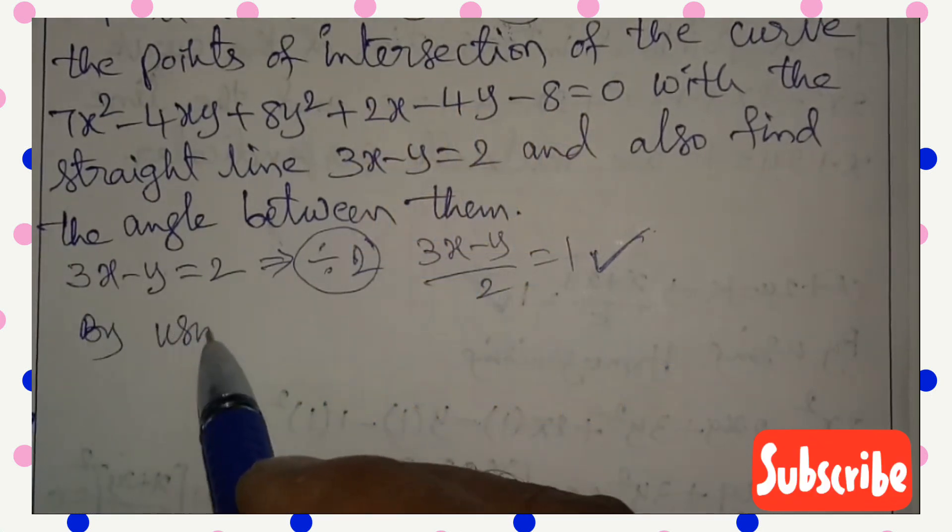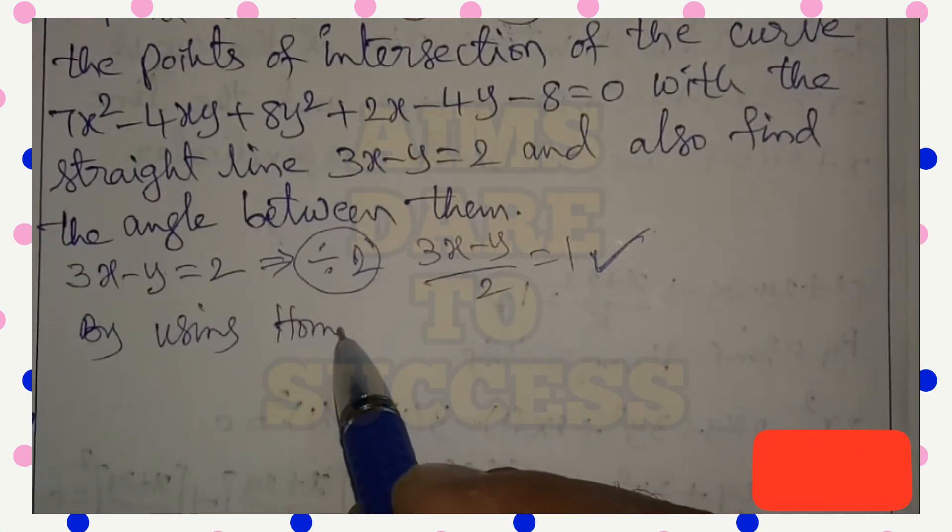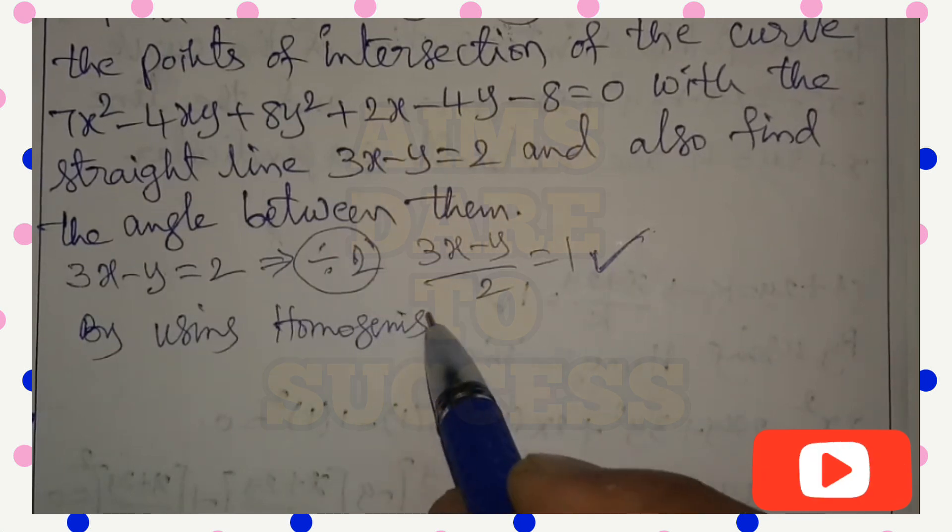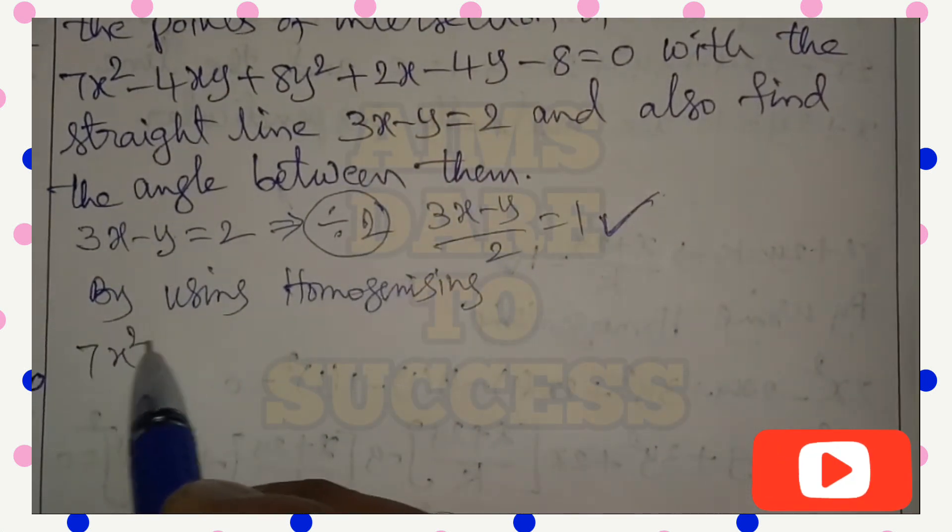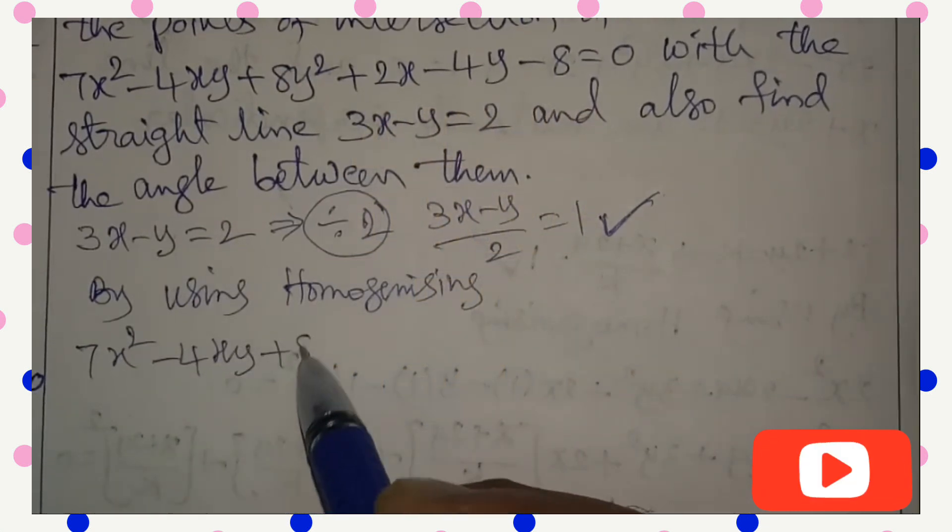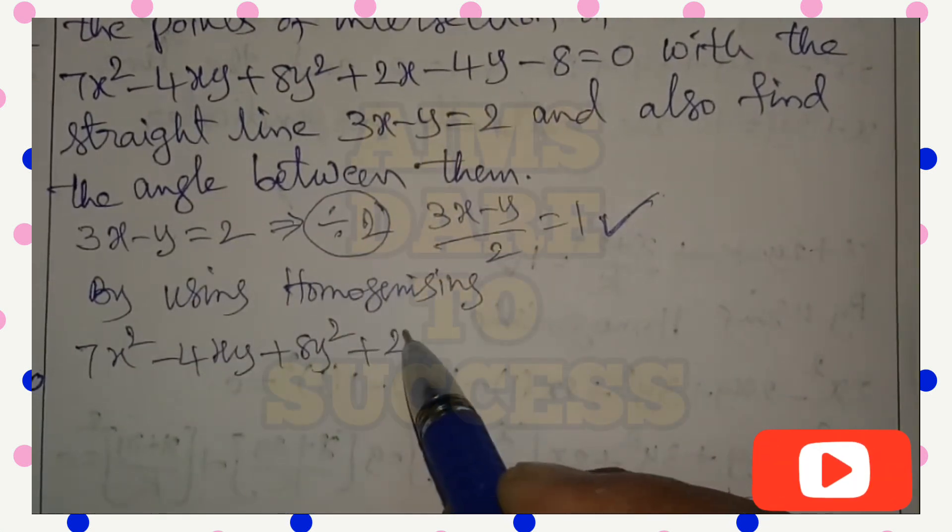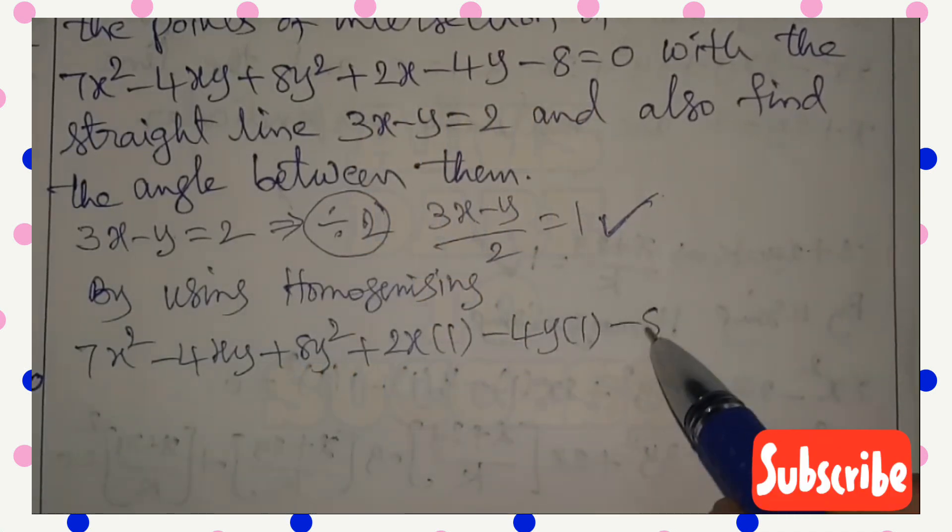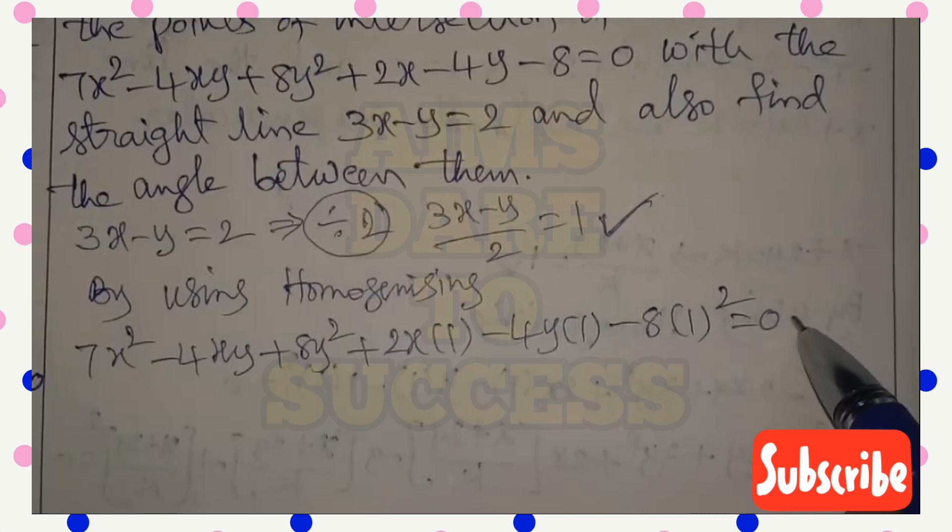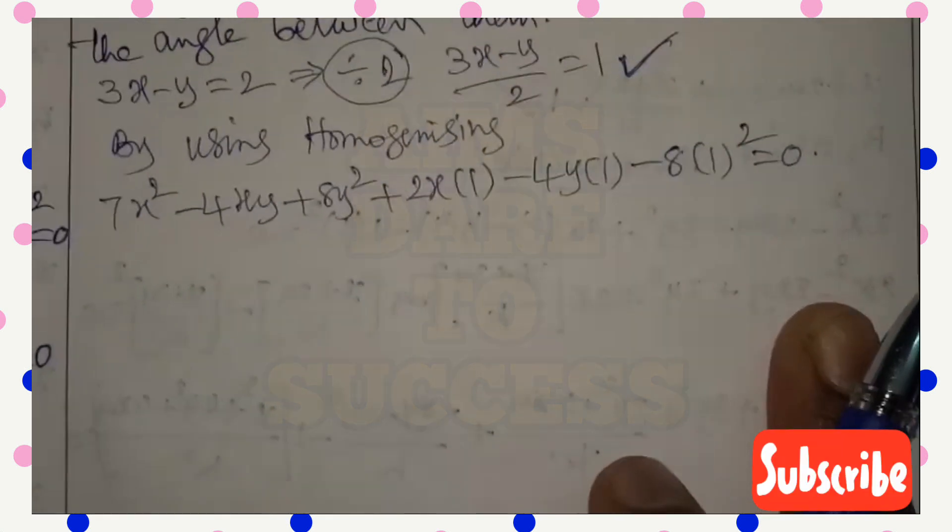By using homogenizing, homogenizing means x² value same, xy same, y² value same, x value into 1, y value into 1, constant value into 1 whole square equal to 0. So I am writing 7x² - 4xy + 8y² + 2x(1) - 4y(1) - 8(1)² = 0.